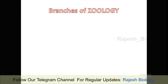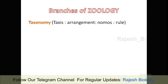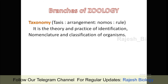There are so many branches in Zoology. Let's see them one by one. First, taxonomy. The word taxonomy comes from 'taxis' meaning arrangement, and 'nomos' meaning rule. It indicates the rule of how to arrange species within a class. Taxonomy is the theory and practice of identification, nomenclature, and classification of organisms.